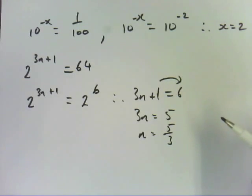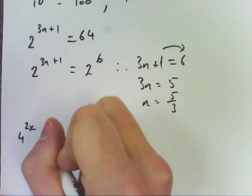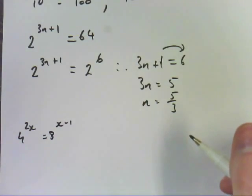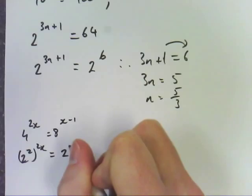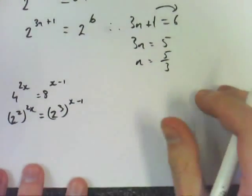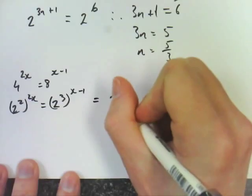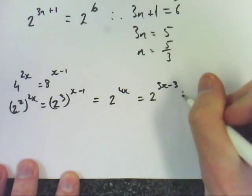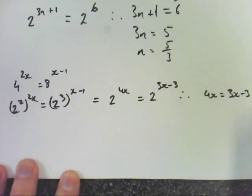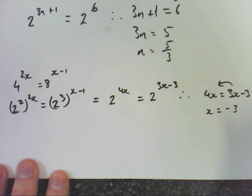You want to go even trickier? Of course you do. Question 3. 4 to the 2x equals 8 to the x minus 1. First step. Get them to the same base. What are we going to do? We're going to go to 2. So, 2 squared to the 2x equals 2 cubed to the x minus 1. Expand the brackets. So, that comes out at 2 to the 4x equals 2 to the 3x minus 3. So, therefore, 4x equals 3x minus 3. Bring this over here. x equals negative 3.